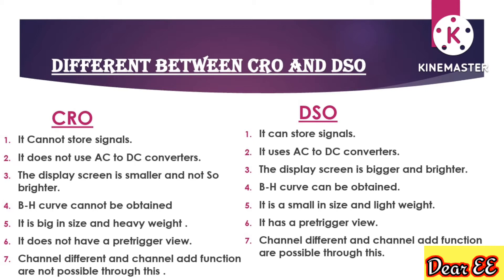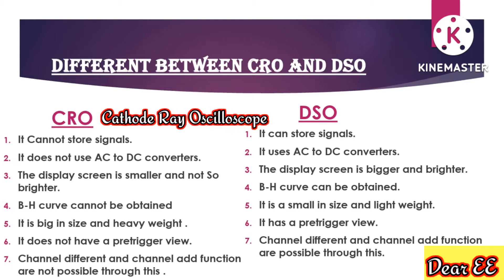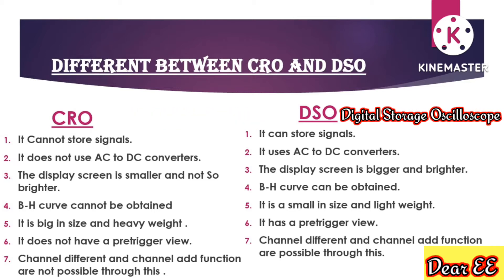First of all, we should know the full forms of CRO and DSO. CRO stands for Cathode Ray Oscilloscope and DSO stands for Digital Storage Oscilloscope. A device that displays the characteristics of a signal like amplitude, frequency, and phase relative to time is called a Cathode Ray Oscilloscope, or CRO.